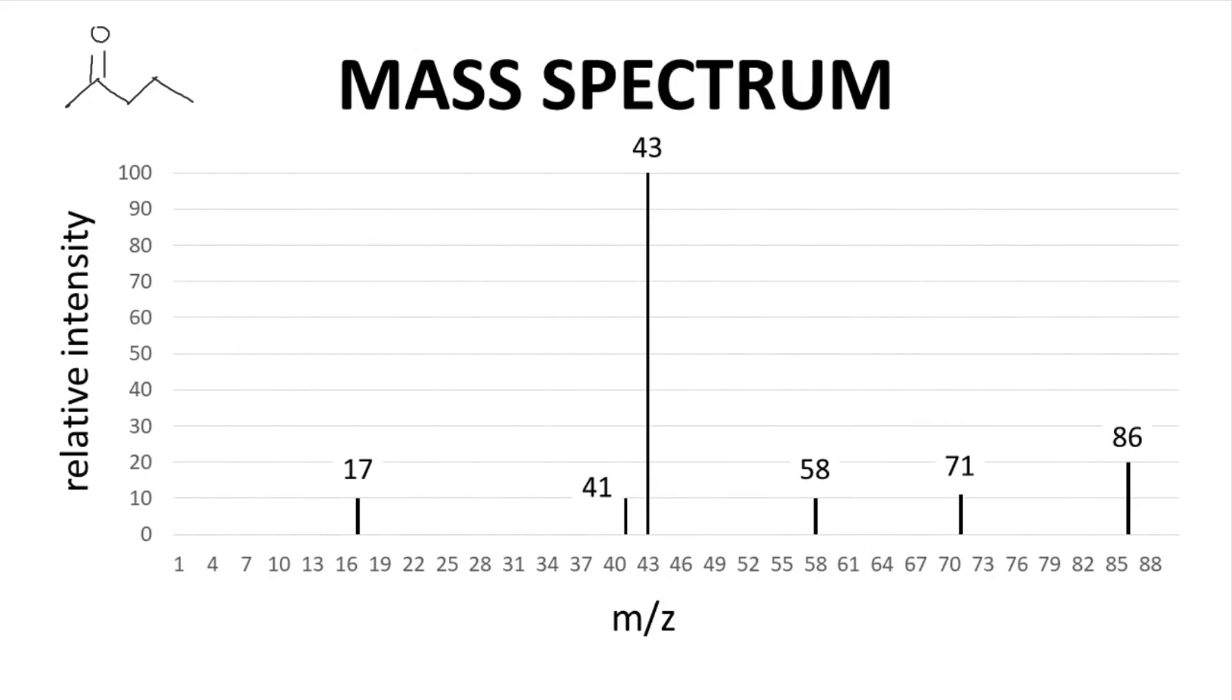Here is our spectrum, and we have 2-pentanone in the upper left. The molecular mass of 2-pentanone is 86, and we do see a peak at 86. This is the parent ion, sometimes called the molecular ion.